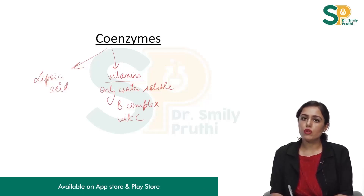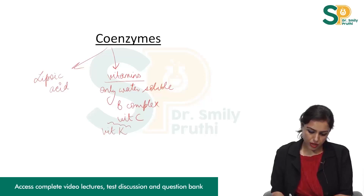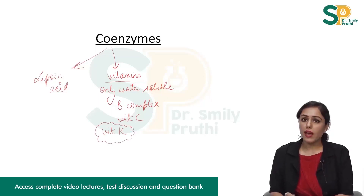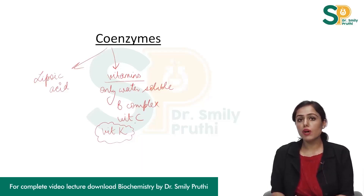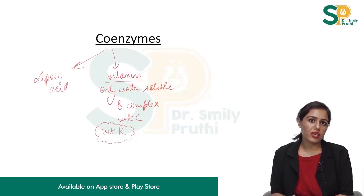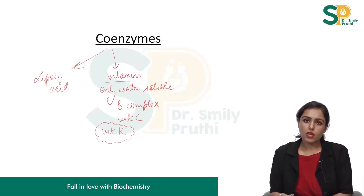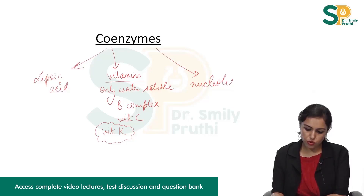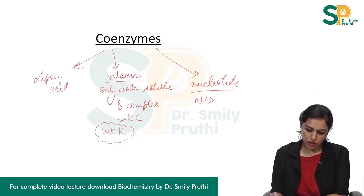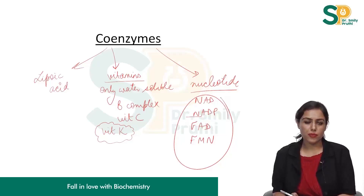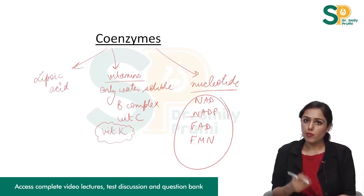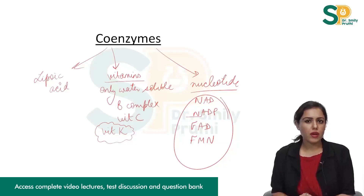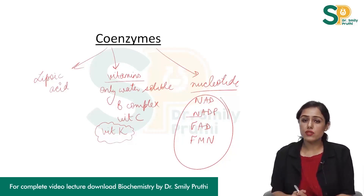Is there any fat-soluble vitamin which acts as coenzyme? There is one — vitamin K is the only fat-soluble vitamin which acts as coenzyme. It acts as coenzyme in the gamma carboxylation of glutamate present in the clotting protein prothrombin. The third category is nucleotides also acting as coenzyme: NAD, NADP, FAD, and FMN — all these are nucleotides which act as coenzyme. Lipoic acid is a coenzyme but not a vitamin.